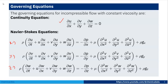The x-momentum equation is: ρ(∂u/∂t + u·∂u/∂x + v·∂u/∂y + w·∂u/∂z) = −∂p/∂x + μ(∂²u/∂x² + ∂²u/∂y² + ∂²u/∂z²) + ρgx. Similarly, we have y and z momentum equations.